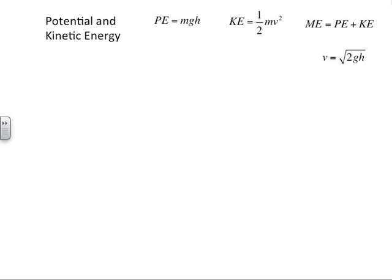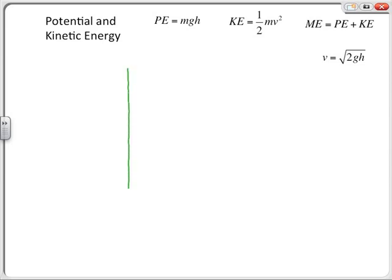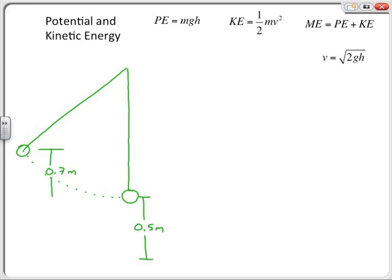Let's take a look at a pendulum situation — like our bowling ball pendulum. We can pull it back on the rope. Let's say initially it was 0.5 meters above the ground, and up at the pulled-back position it was 0.7 meters above the original location, or 1.2 meters above the ground. The mass of the bowling ball is 5 kilograms.